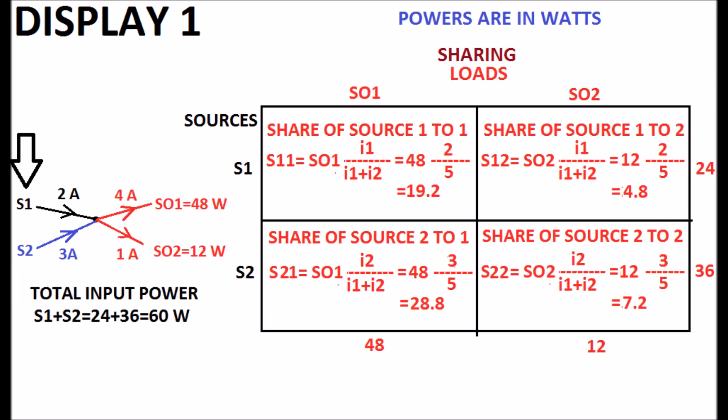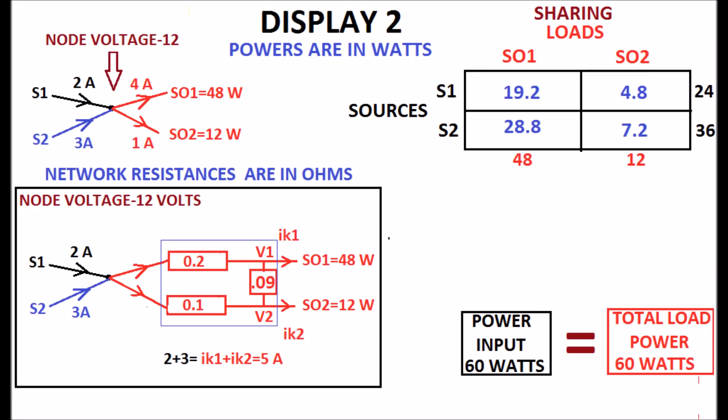Sources S1 and S2 are feeding power to the two loads SO1 and SO2 through a node. Calculation and the value of sharing of each source to each load is shown in matrix form. Refer to display 2.